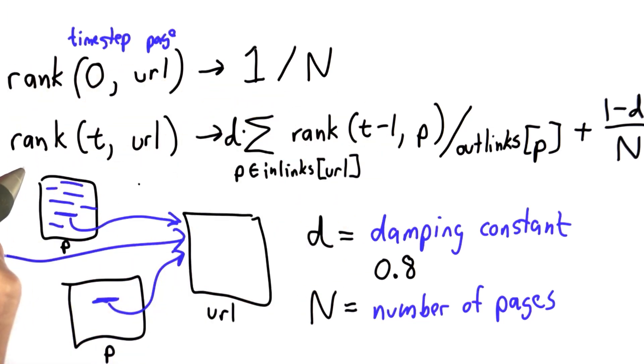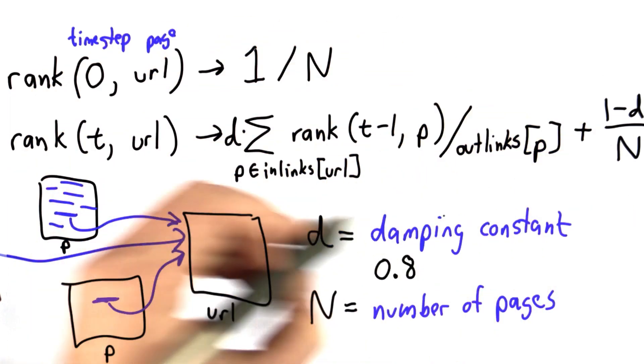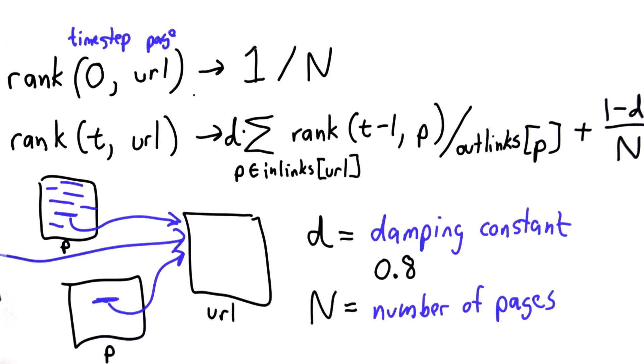The more time steps, the more accurate rankings we'll have, but the longer it will take. So we'll just pick a value for the maximum number of time steps, and we'll make our loop go through those steps, computing these equations. So let's work out the code to do that.